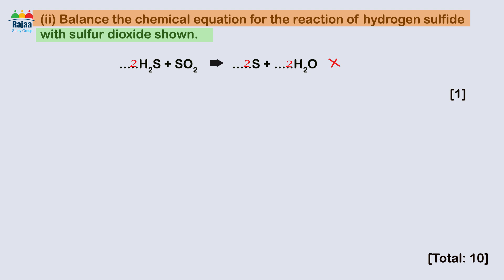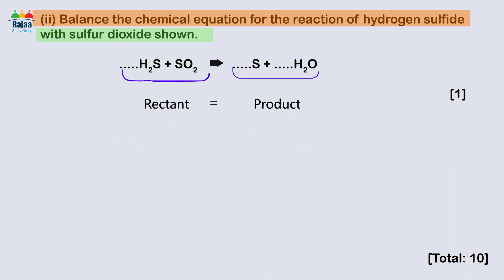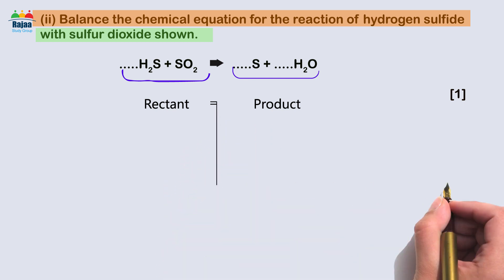When a chemical equation is balanced, the number of reactant elements equals the number of product elements. Draw a line in the middle, count the number of atoms on each side of the equation.